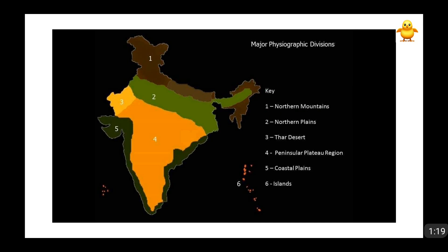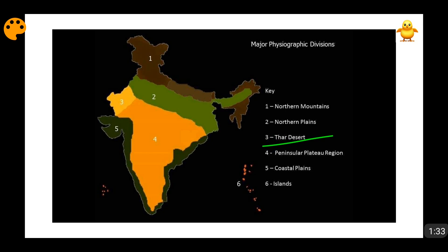Then comes the northern plain. This whole green region is the northern plain, also extending in the northeast. It is primarily composed of alluvial soil. Then next is the Thar Desert, located by this light yellow. Then comes the peninsular plateau region, denoted by this orangish color.